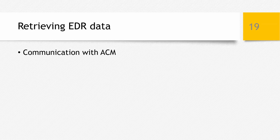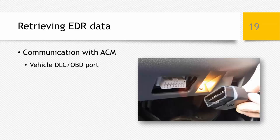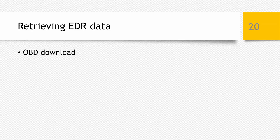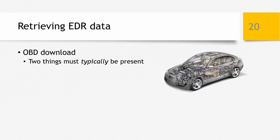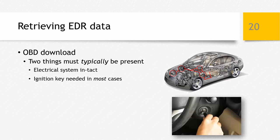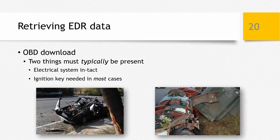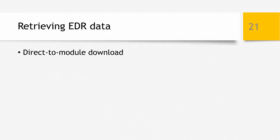Let's talk about retrieving or downloading the data. In most cases, the data is contained in the airbag control module. The easiest way to communicate with it is by connecting to a vehicle's OBD port — the connection port beneath the dash that mechanics connect their scan tools to. To go through the OBD port, two things are typically needed: the car's electrical system must be intact and powered up (a jump box can be used for a dead battery), and in most cases you'll need the vehicle's ignition key. You don't need to start the engine, but you need the key to power up the electrical system.